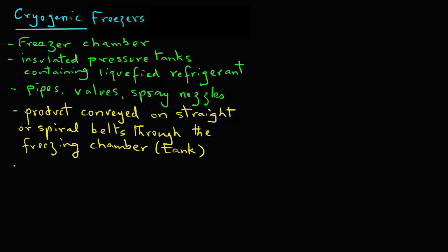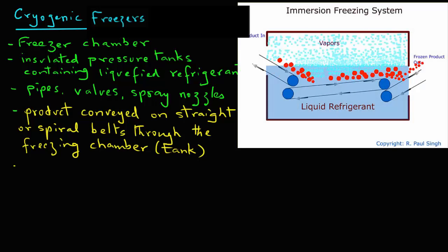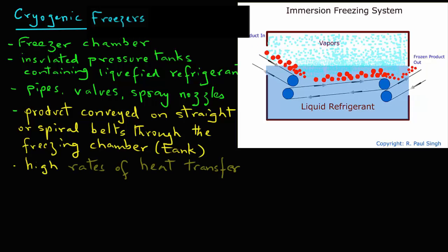When the cryogen comes into contact with the product, it converts from liquid to vapor state. In other words, it boils, and as a result, one gets very high rates of heat transfer. Liquid nitrogen has a boiling point of minus 196 degrees Celsius.